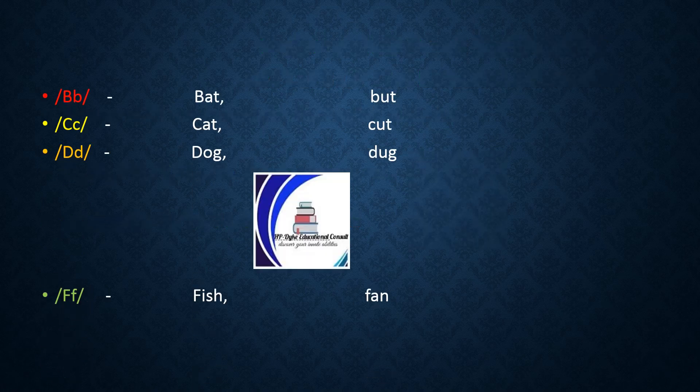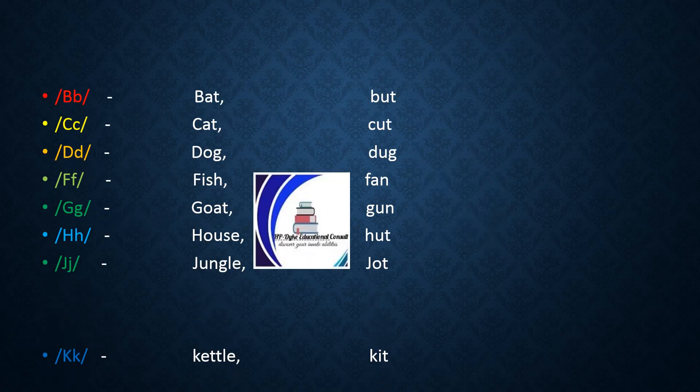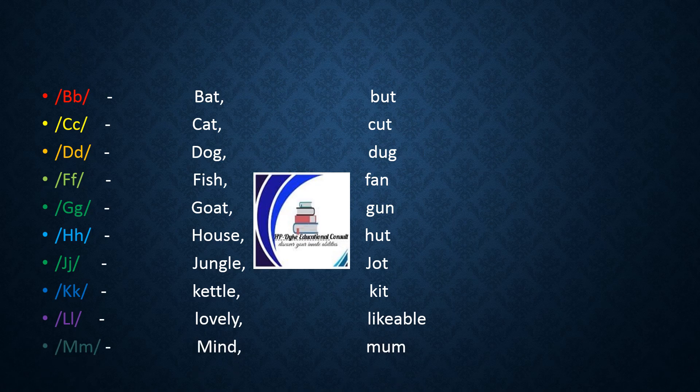Now let's look at some of those consonants with examples. B: bat, bet. C: cat, cut. D: dog, dog.